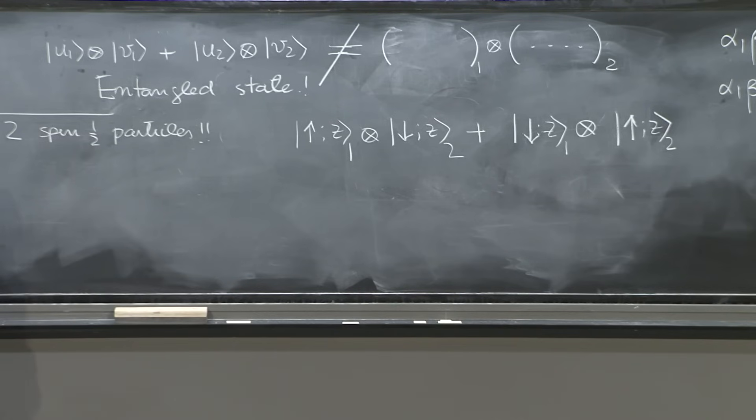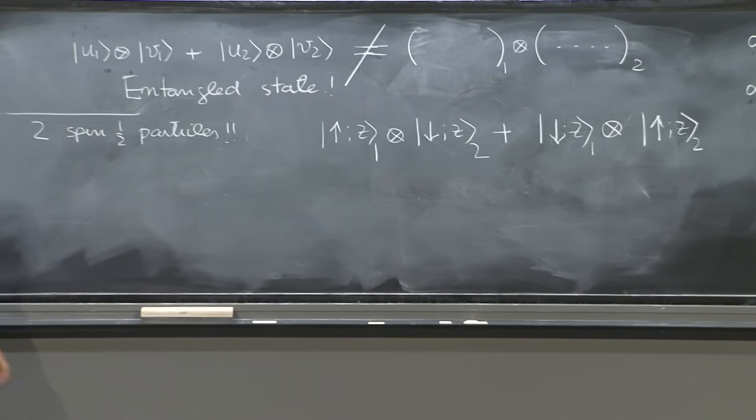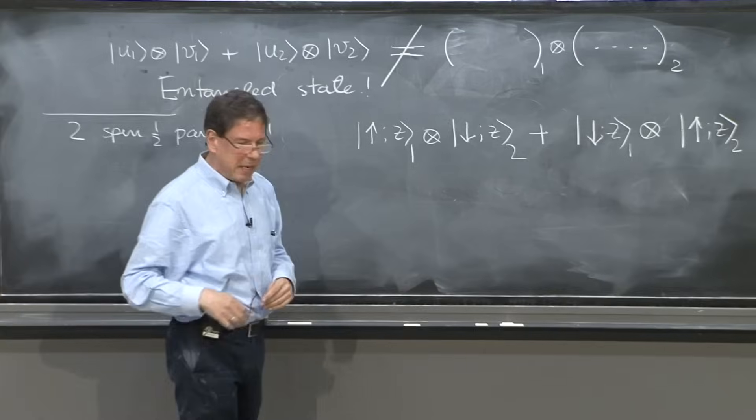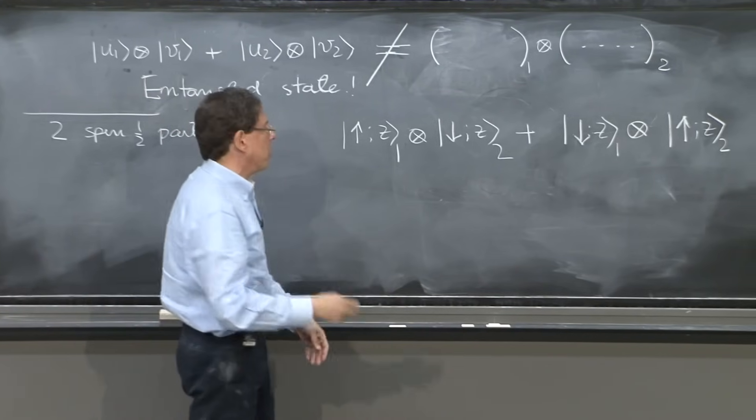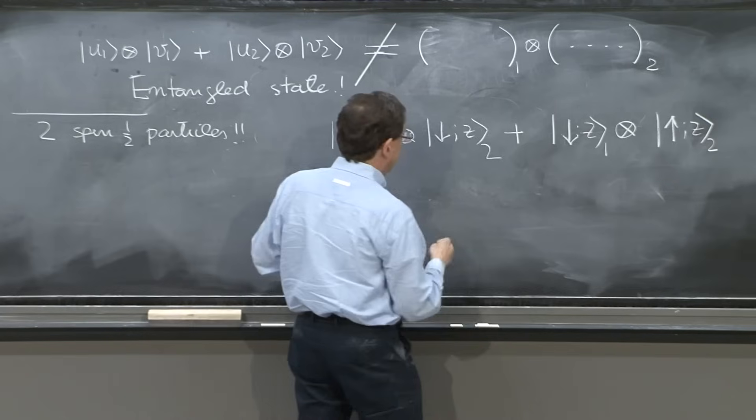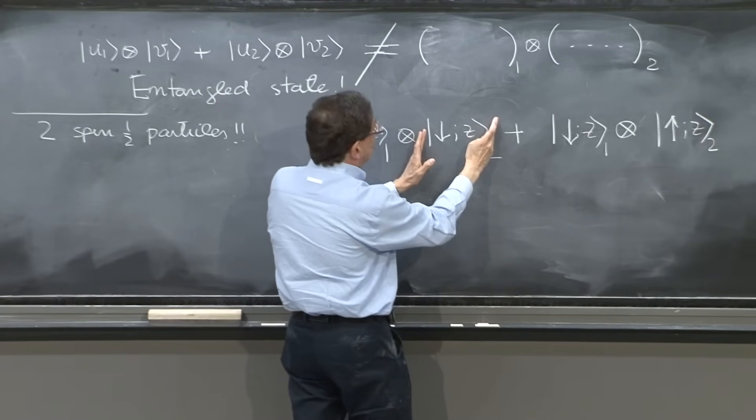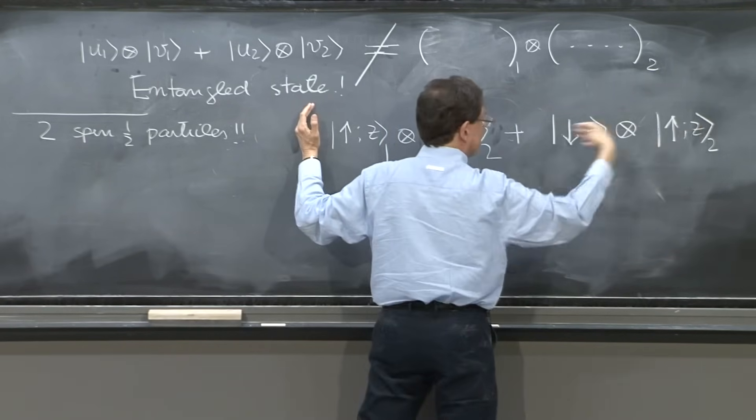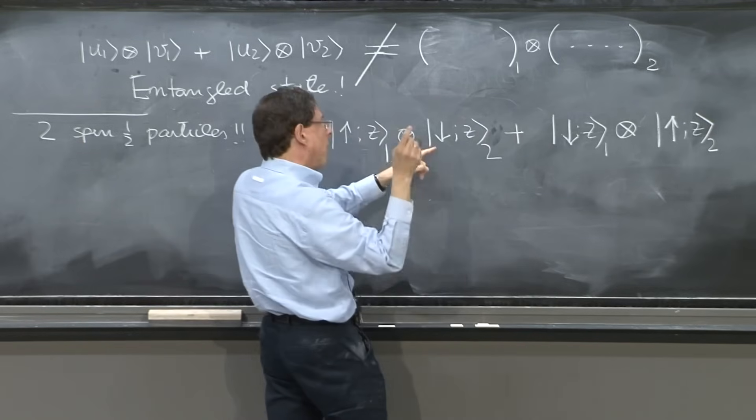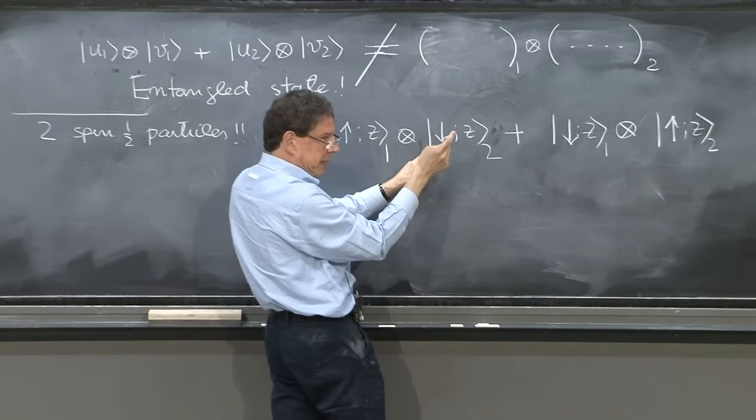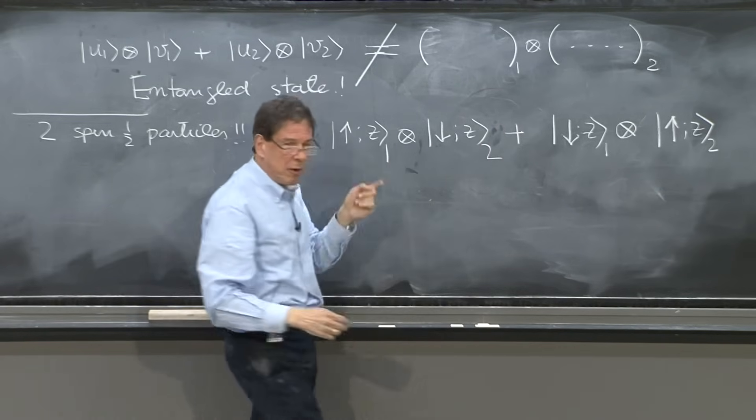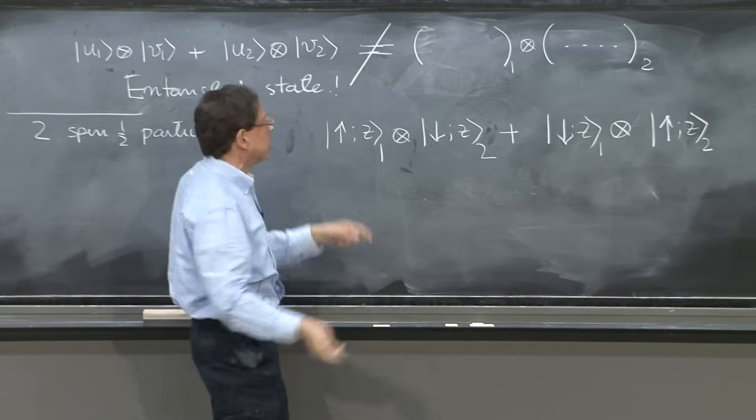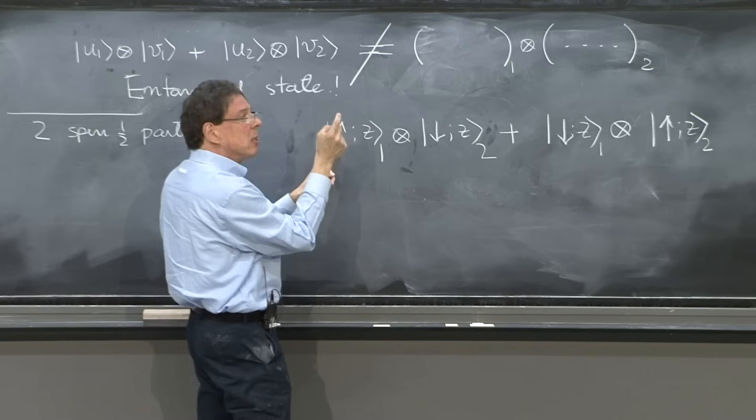So what happens here? Suppose Alice, or let's say Bob, goes along and measures his spin and he finds his spin down. So you look here, here is down for Bob. So at this moment the whole state collapses into this, because up with Bob didn't get realized. So once Bob measures and he finds down, the whole state goes into this. So if Alice on the moon or in another galaxy at that instant looks at her spin, she will find it up.